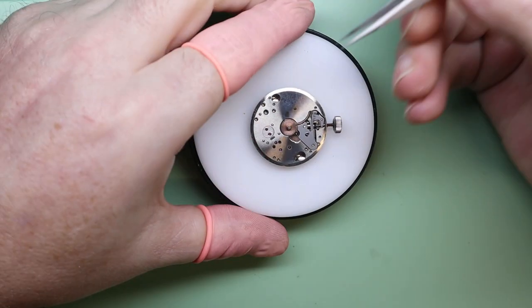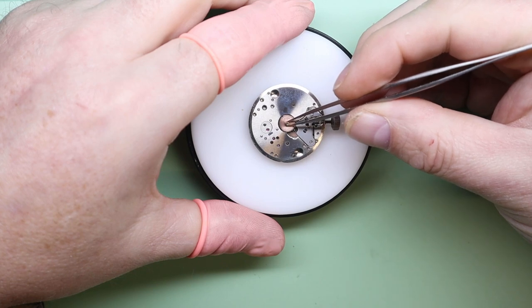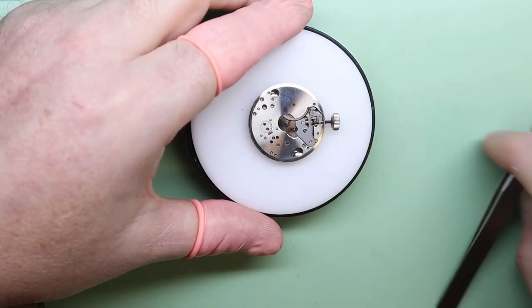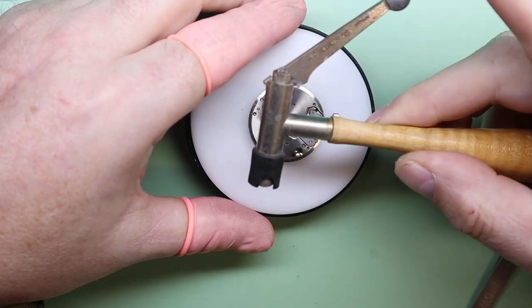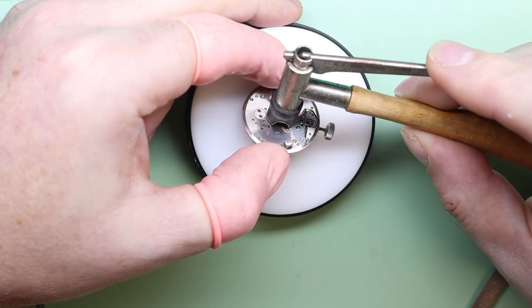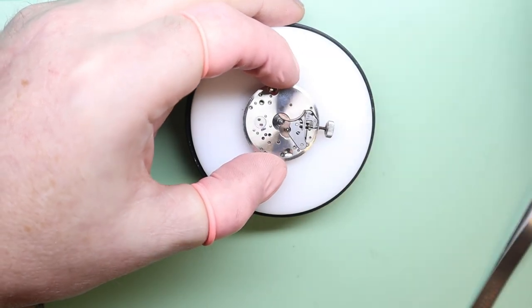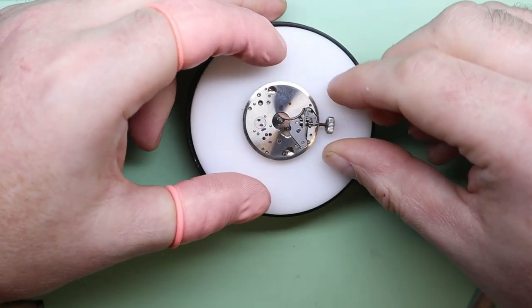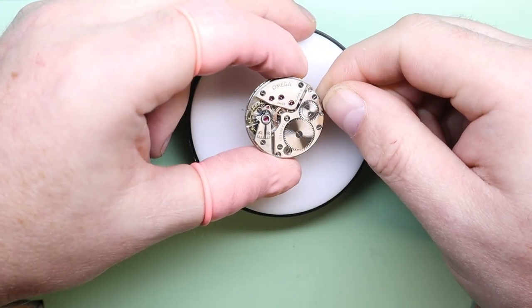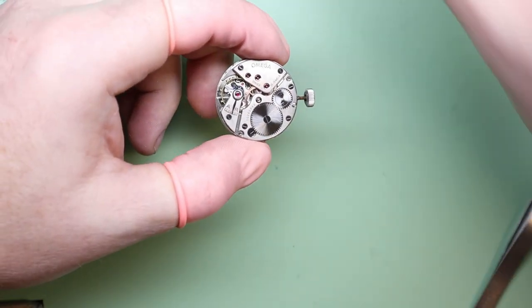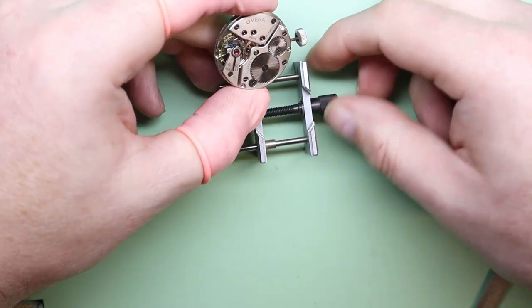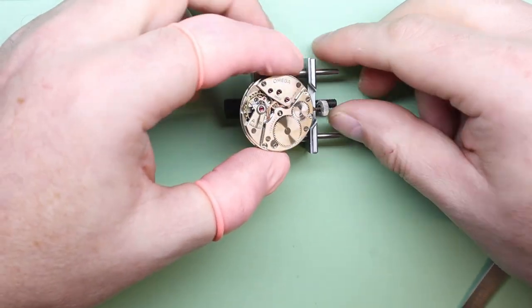Moving on with the disassembly, we're going to start off with the hour wheel and then we're going to remove the cannon pinion using the cannon pinion removal tool. This is an American cannon pinion tool. There is a Swiss version, but it's limited to the size of cannon pinion you can remove. This American one has been in my workshop for well over 10 years and it's been great. I've used it on nearly every single watch.